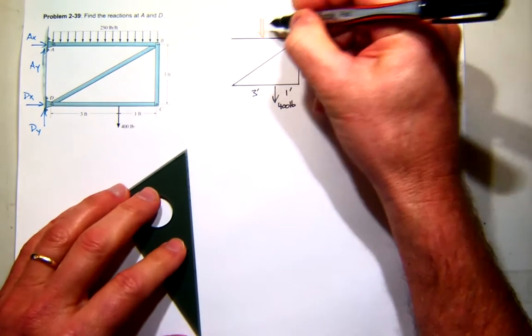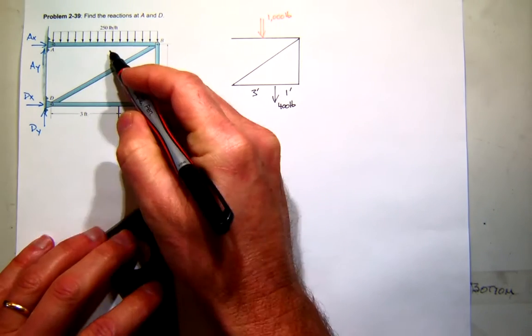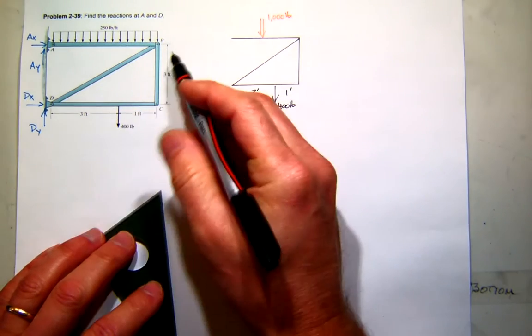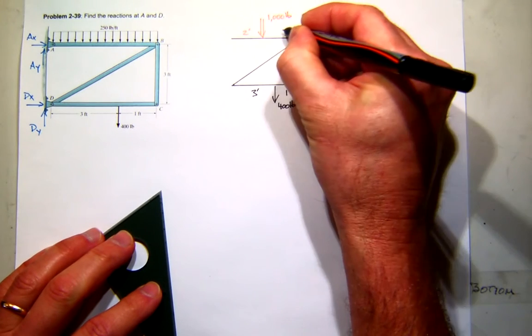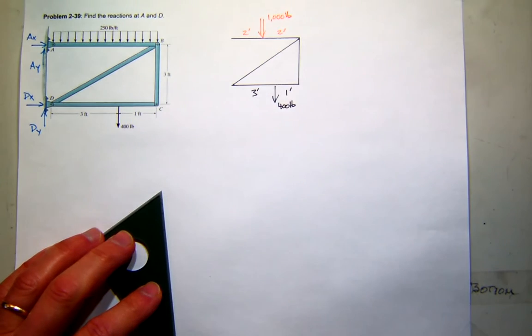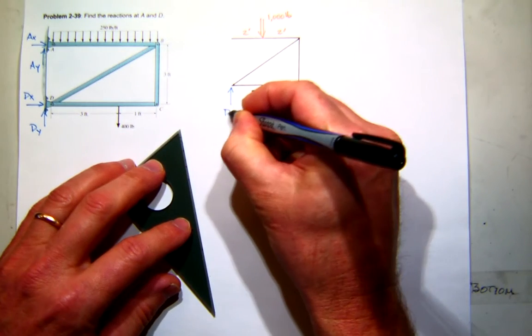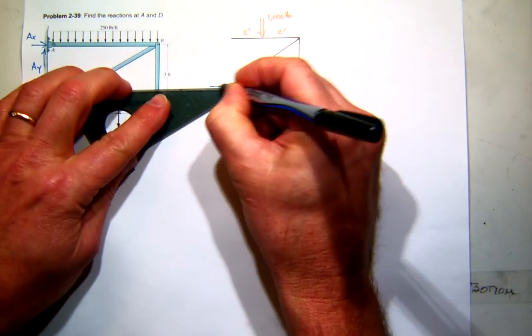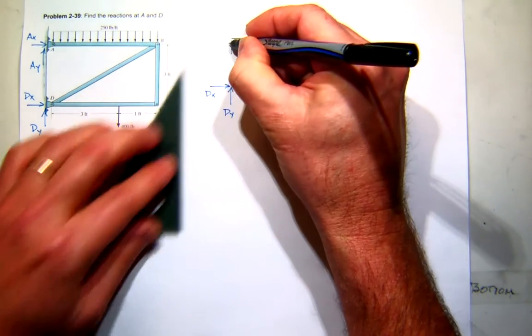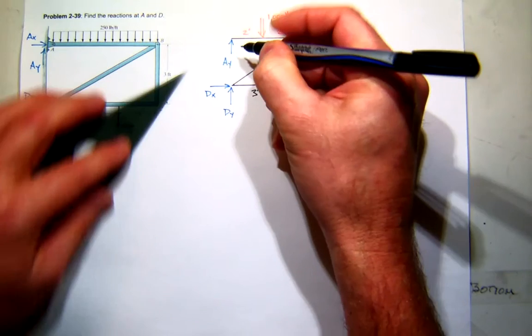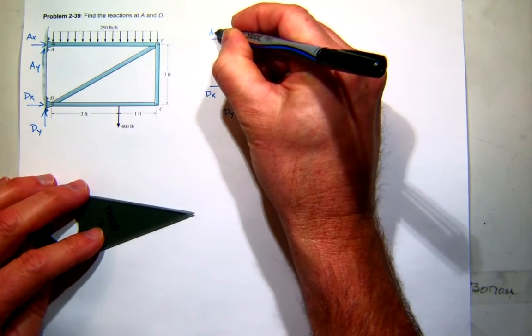And it acts through the centroid of that area. We all know the centroid of a rectangle is just midway. So that should be at two feet and two feet. And just so you can see it again, it might be a little clearer now. I'll go ahead and relabel the reactions at D and the reactions at A. Any questions about that?